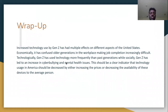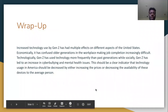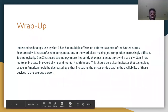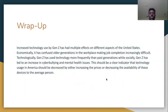Increased technology use by Gen Z has had multiple effects on different aspects of the United States. Economically, it has confused older generations in the workplace, making job completion increasingly difficult. Technologically, Gen Z has used technology more frequently than past generations. Socially, Gen Z has led to an increase in cyberbullying and mental health issues. This could be a clear indicator that technology usage in America should be decreased by either increasing prices or decreasing the availability of these devices to the average person.